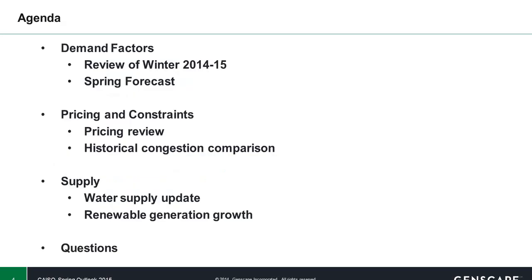Quick agenda on what will be covered. We're going to open with demand factors, including a review of the winter that we just recently completed, 2014-2015, as well as spring forecast looking forward. We'll then move on to pricing and constraints, including a review of pricing for the most recent winter, as well as some historical congestion comparison. We'll then finish up with supply details, including an update on water supply, as well as covering some of the renewable generation growth that continues to impress to a large degree.